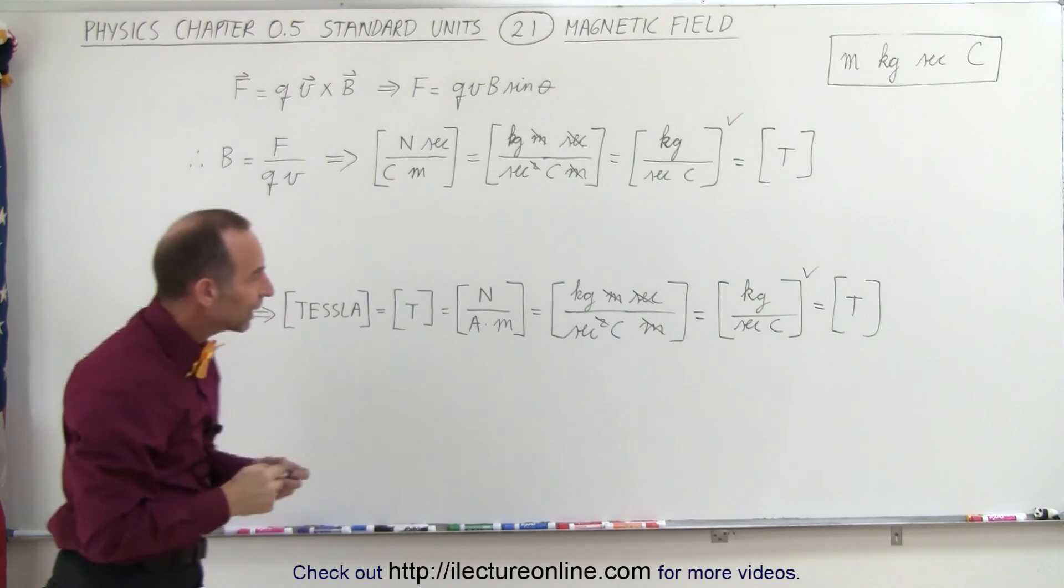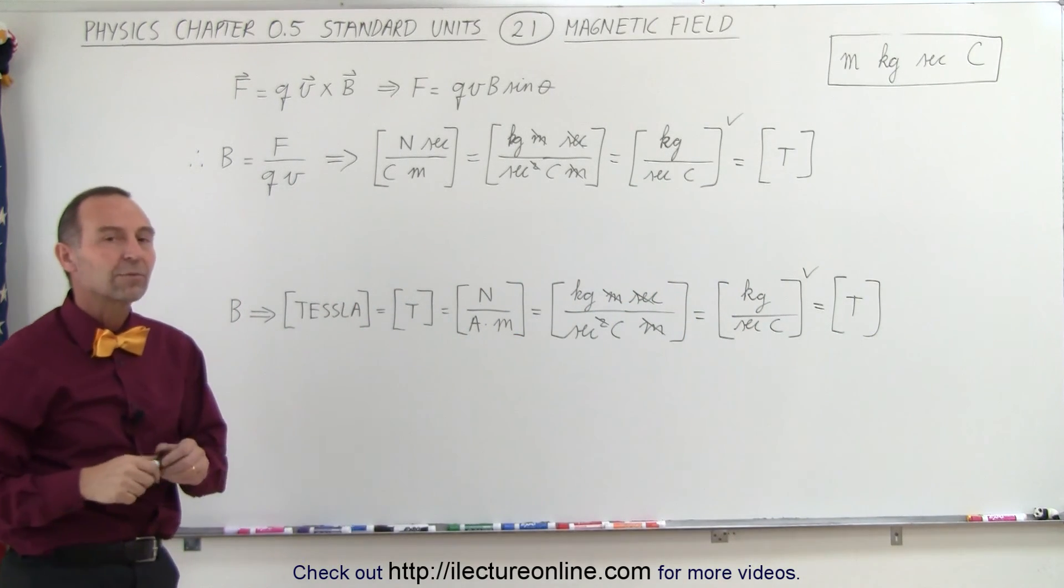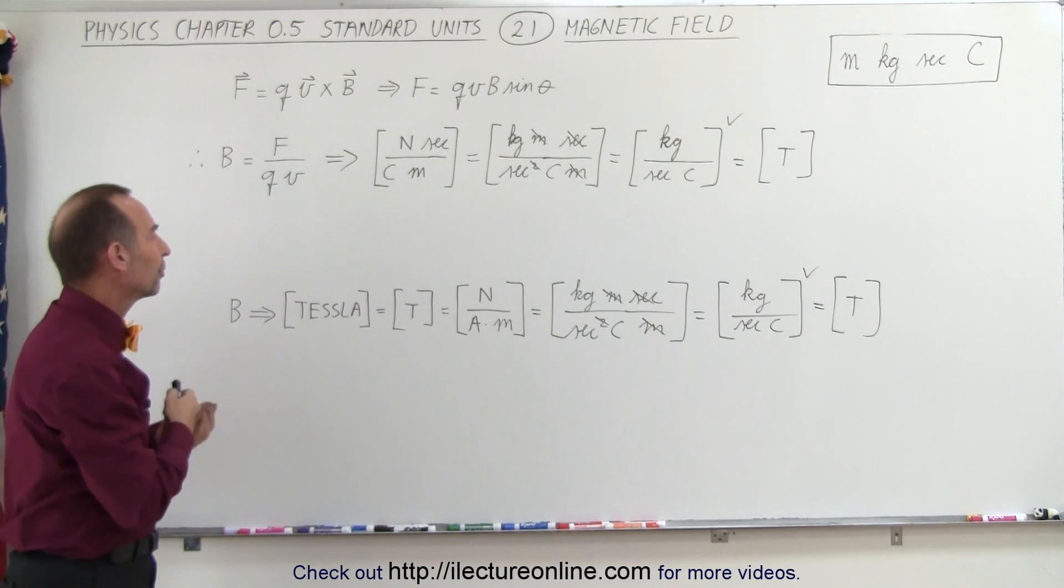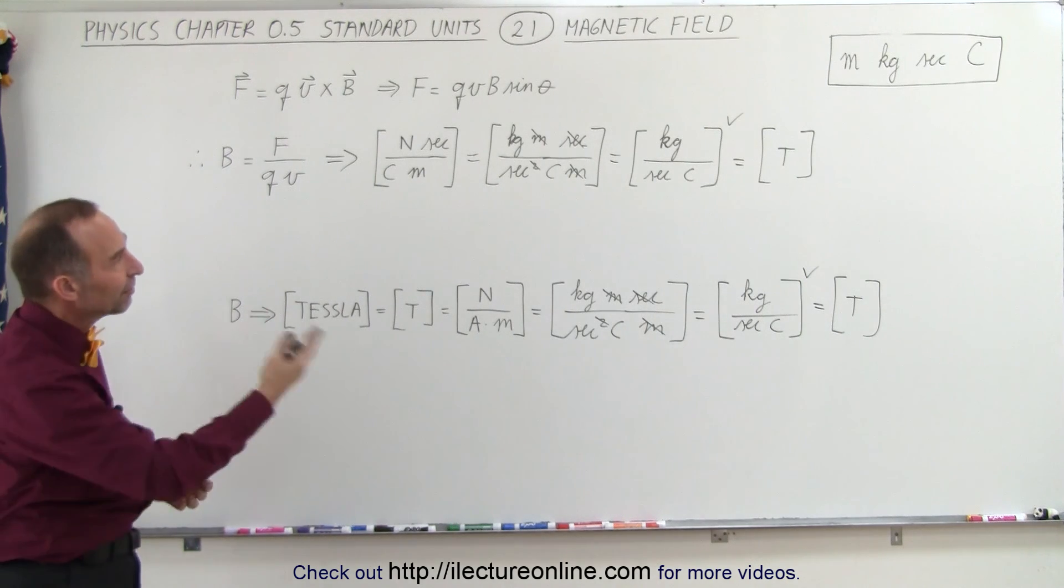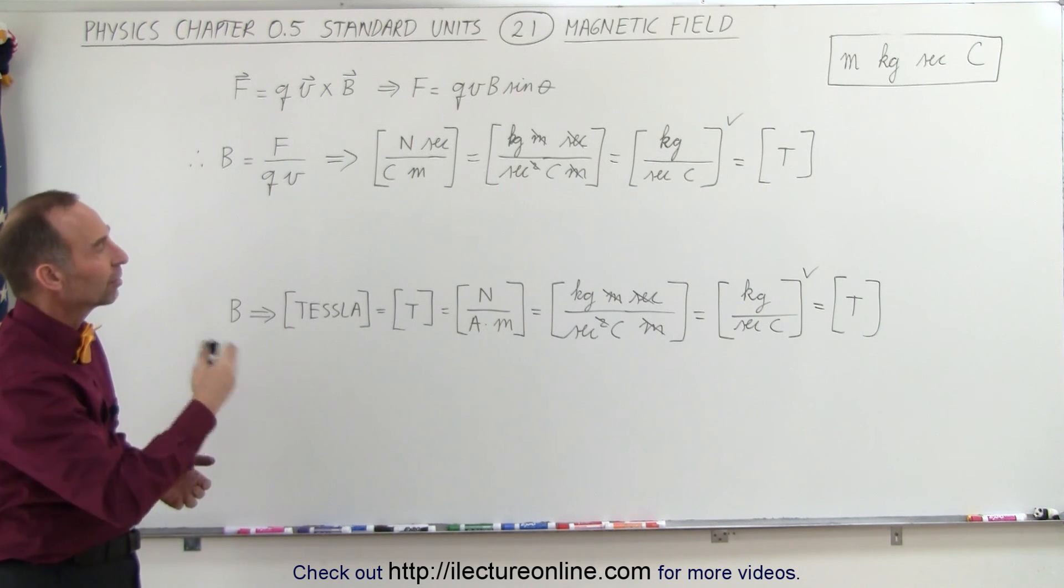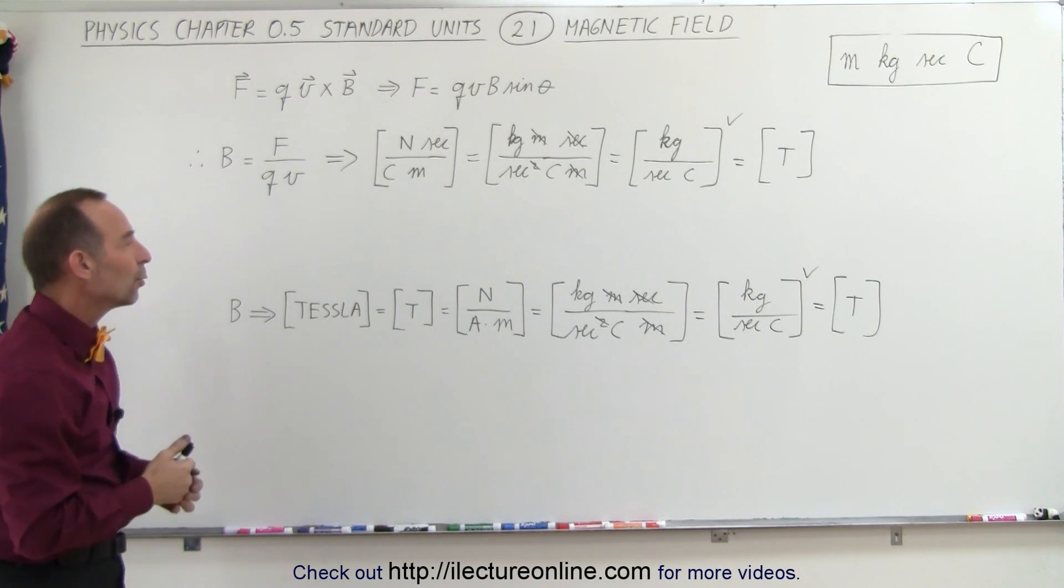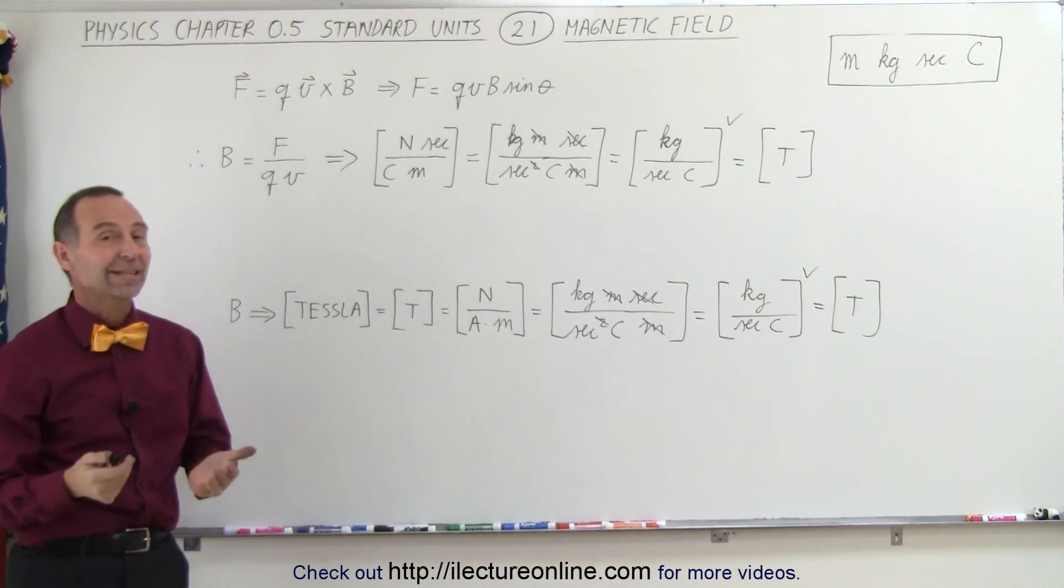Later on, we'll also talk about the concept of Weber as the unit for magnetic field. But at this point, the standard unit of tesla can be defined as kilograms per second per coulomb in either way that we've calculated it. And that's how it goes.